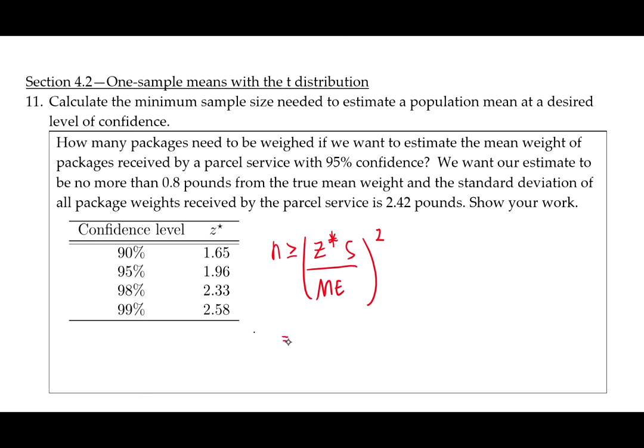So our z star for 95% confidence is 1.96. The standard deviation that we are given is 2.42. And the margin of error, the maximum distance we want to be away from the parameter, is 0.8. And then we need to square this whole thing.